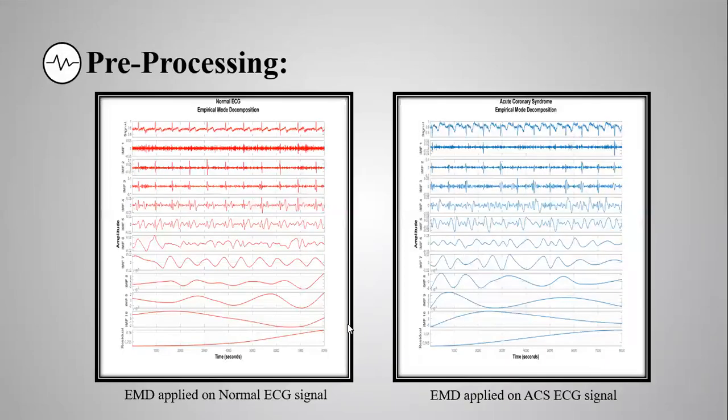The waveforms of IMFs of normal and ACS signals can be seen in these figures. We can see that the first IMF contains the instrumental noise, so it is ignored. The last two IMFs are also neglected because they contain the traces of motion artifacts. Finally, the pre-processed signals of normal and ACS signals are reconstructed using IMFs 3, 4, 5, and 6.